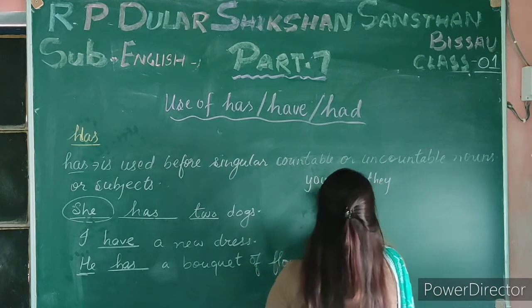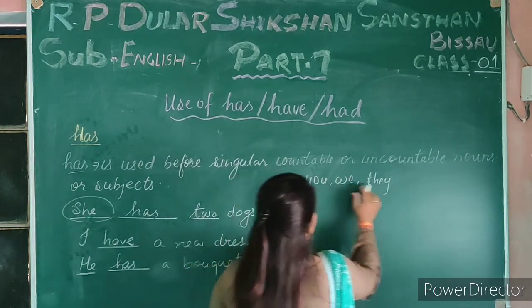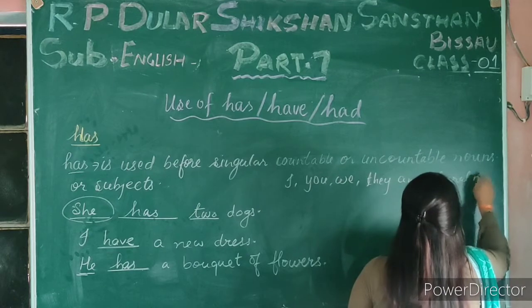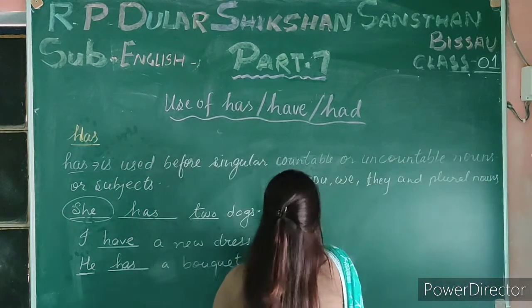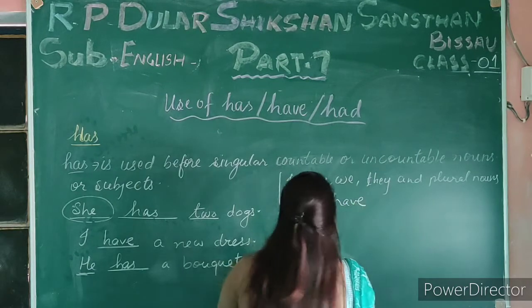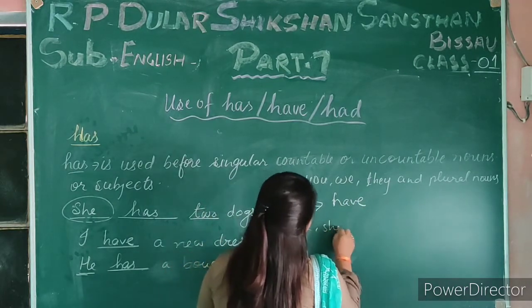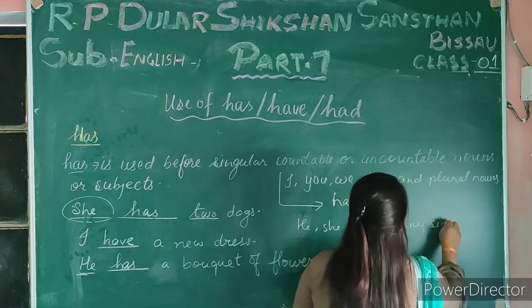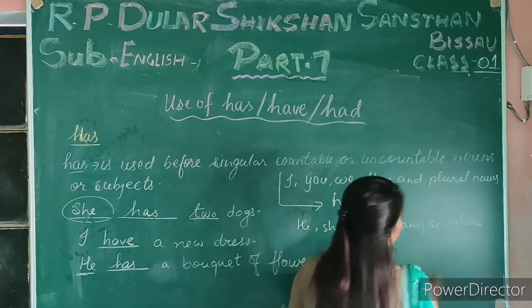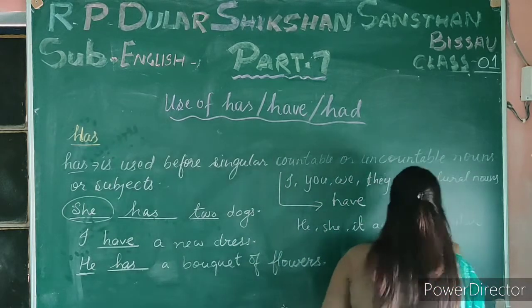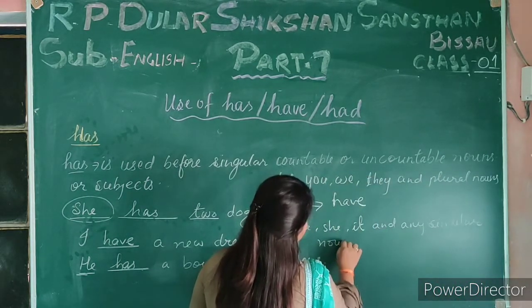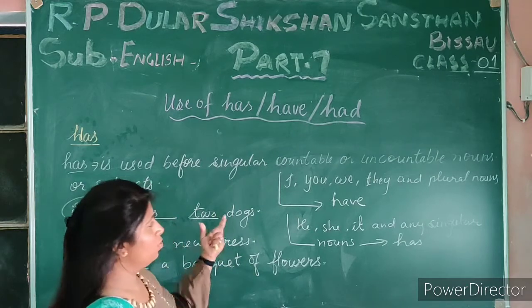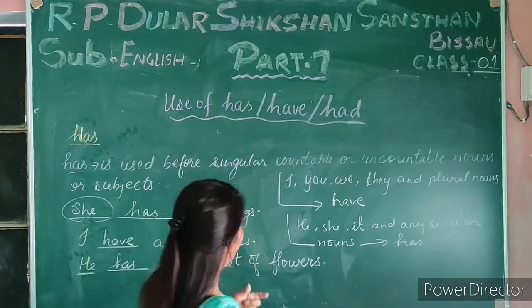You, they, and I — with these plural and first-person subjects you write have. He, she, it, and any singular noun — whether it is a name, a place, or anything — with these you write has. So these are the uses of has.